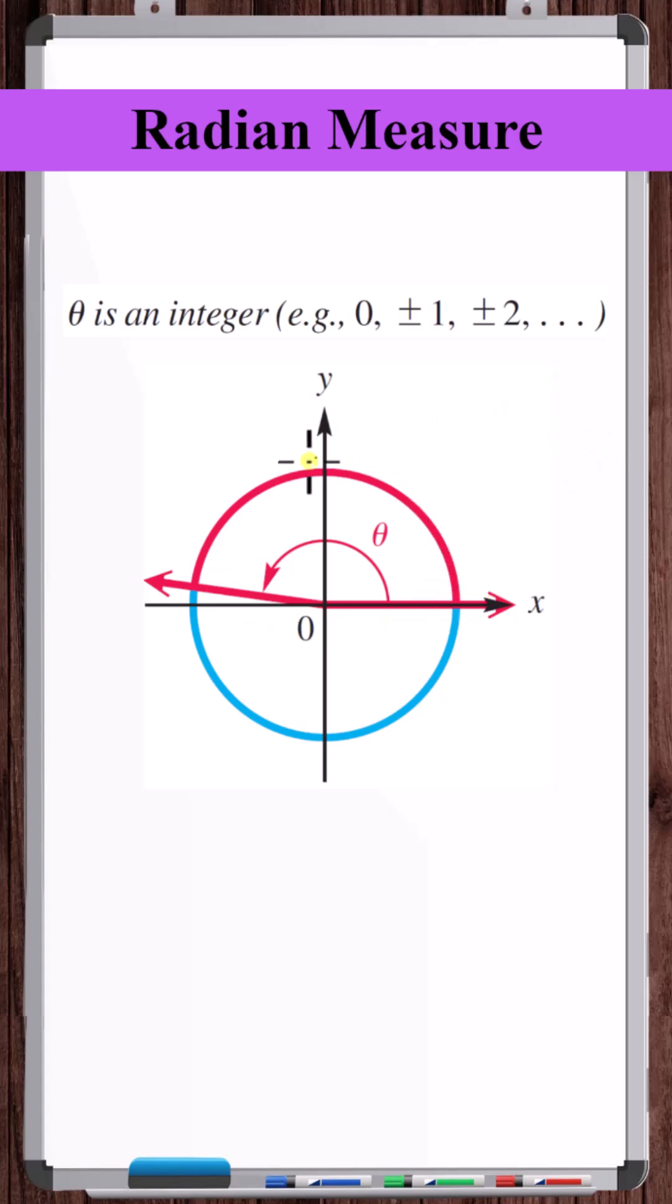So approximately how many radiuses is this? Well, 2 times pi is a little over 6. So to go all the way around the circle, you go a little over 6 radiuses. Let's divide this rotation up into about 6 pieces.